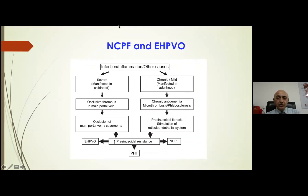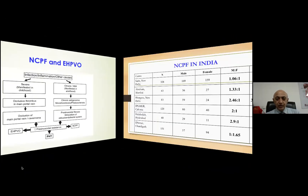The basic difference between the two causes of non-cirrhotic portal hypertension — NCPF and EHPVO — is as follows: if you have a chronic smoldering disease because of persistent antigenemia leading to microthrombosis and fibrosclerosis of the medium and small branches of the portal vein, resulting in pre-sinusoidal portal hypertension, that is NCPF. But if you have a severe infection starting in early childhood, leading to occlusion of the main portal vein and replacement by cavernoma, that is extra-hepatic portal vein obstruction.